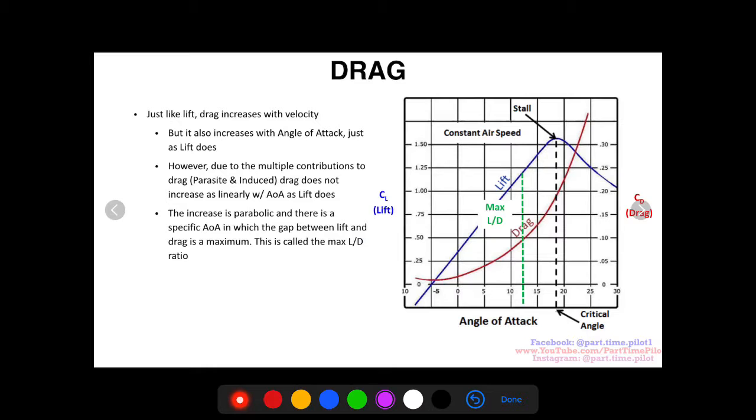So what this means is that there's a gap between the lift and drag curves, and there's a point where this gap is the greatest. So as you can see on this green line, the distance between the lift curve and the drag curve is the maximum,